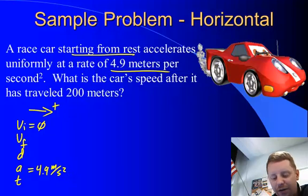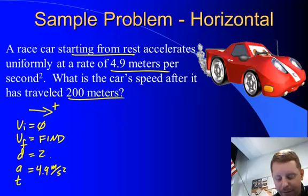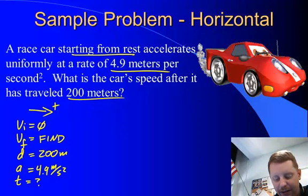We're asked, what is the car's speed? That's final velocity, so that's what we're trying to find. After it has traveled 200 meters, that must be our displacement. So we know VI, VF, D, and A. We don't know T. It doesn't tell us anything about it. But it tells us three items that we do know.